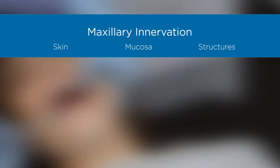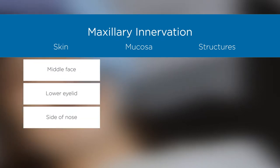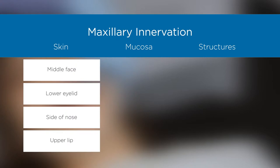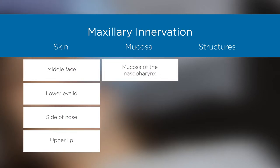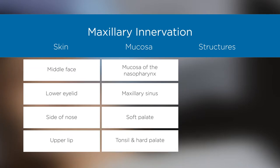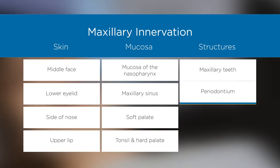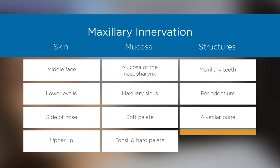The maxillary division of the trigeminal nerve is exclusively sensory and innervates the skin of the middle portion of the face, lower eyelid, side of nose and upper lip, the mucosa of the nasopharynx, maxillary sinus, soft palate, tonsil and hard palate, and the maxillary teeth, periodontium, alveolar bone, and gingiva.